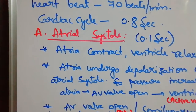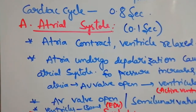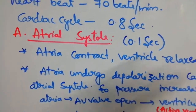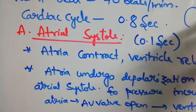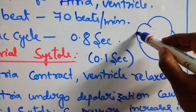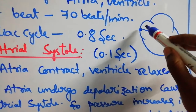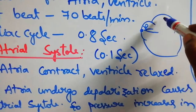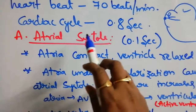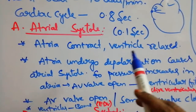First is atrial systole. Atrial systole takes place in 0.1 second. The SA node is present at the upper part of the right atrium. From here, signals are passed to the right and left atria, and both undergo contraction — that is called atrial systole. Atrial systole takes place in 0.1 second.